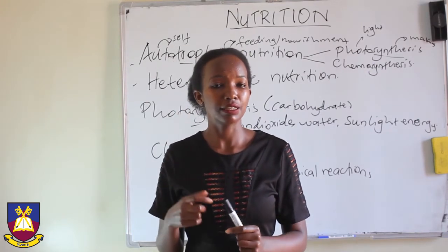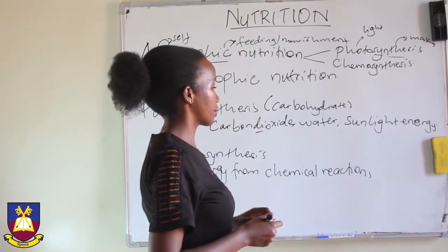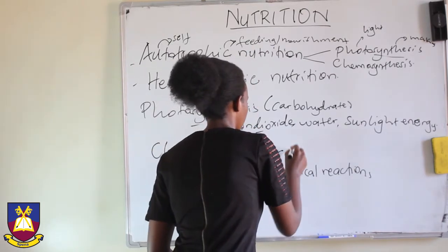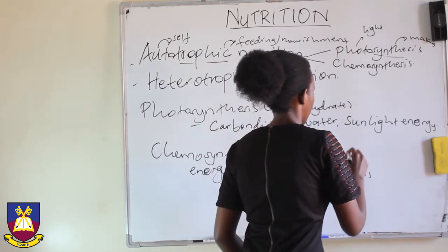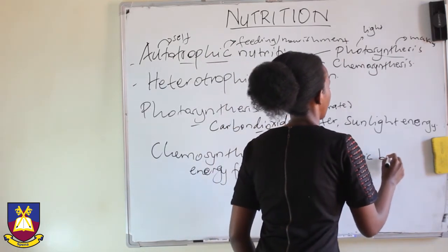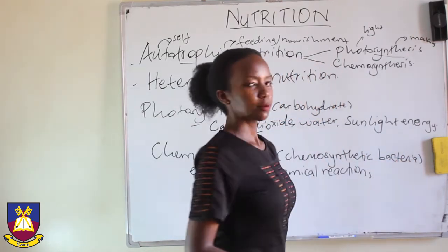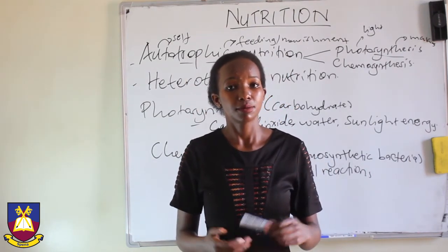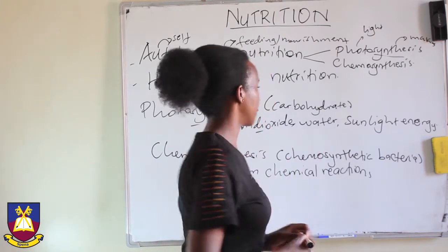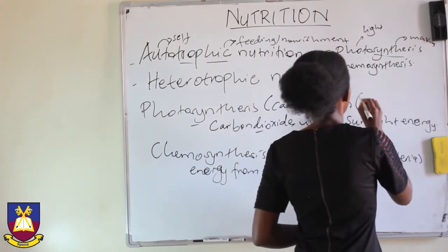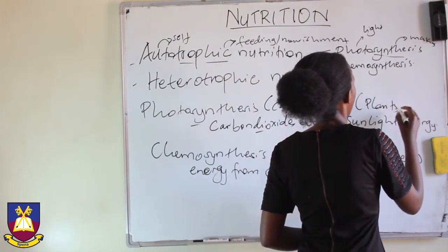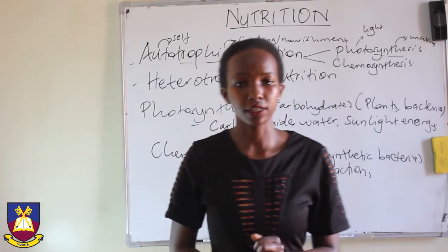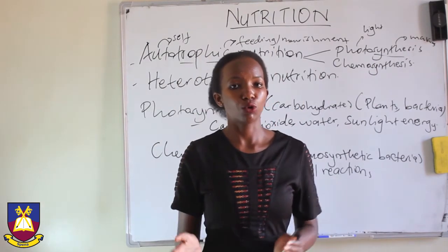We are going to see more about that in detail. Some of the examples that carry out chemosynthesis are what we call chemosynthetic bacteria. Some of the organisms that carry out photosynthesis are green plants and photosynthetic bacteria. In a nutshell, that is what we can say about autotrophic nutrition.